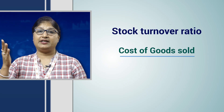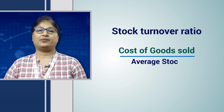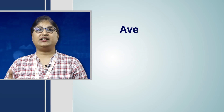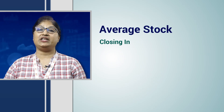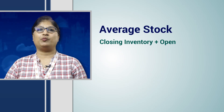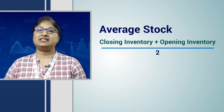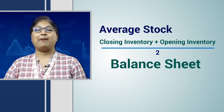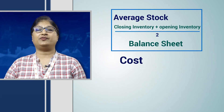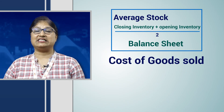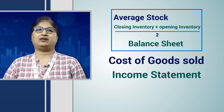Average Stock is the closing inventory plus opening inventory divided by two, and is found in the balance sheet. The Cost of Goods Sold is listed in the income statement.